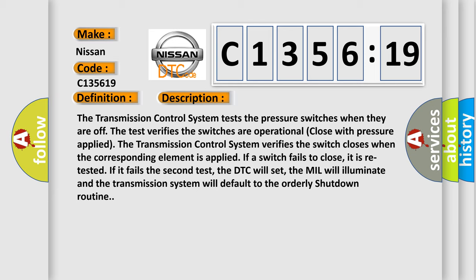And now this is a short description of this DTC code. The transmission control system tests the pressure switches when they are off. The test verifies the switches are operational and close with pressure applied. The transmission control system verifies the switch closes when the corresponding element is applied. If a switch fails to close, it is retested.